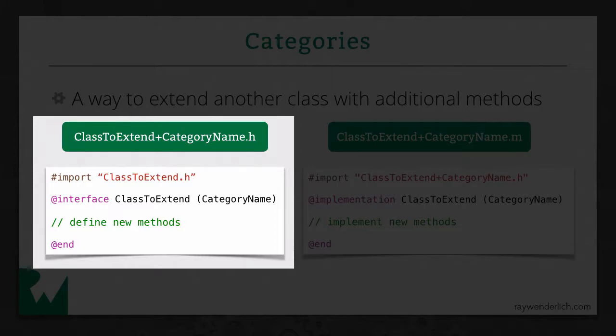So, the next thing is you import whatever class you're trying to extend, and then you say @interface, and the name of the class you're extending, and then inside parentheses, you put whatever the name of your category is. So another convention is categories are often named something additions. And then you list out your various methods that you want to add to the class, and at the end, you put @end.